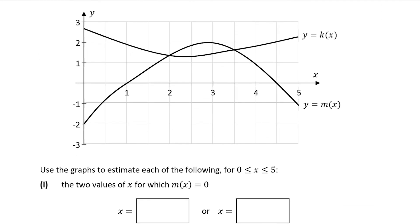Now let's look at part c. We're asked to find the two values of x for which m(x) = 0. m(x) = 0 means we're looking along the x-axis, because y = 0 along the x-axis. Whenever you have m(x) equal to a number, that number is the y-value and you find the corresponding x-values. I've drawn a line over the x-axis in pink and we can clearly see it hits the x-axis at two places: x = 1 and x = 4.5.